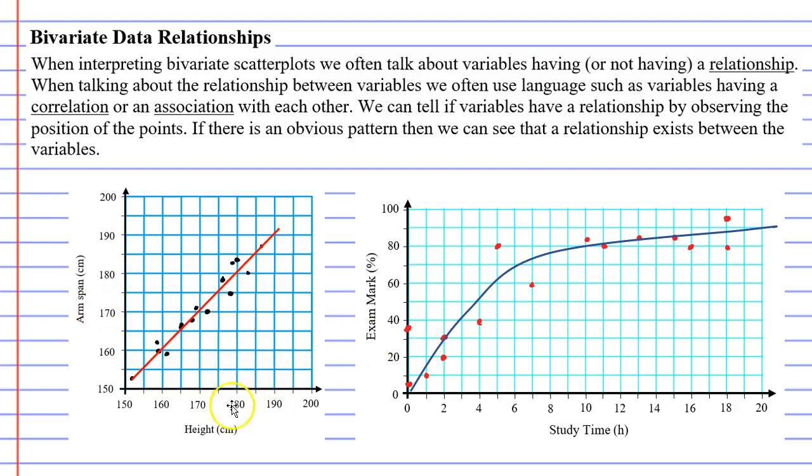The first graph showed a relationship between height and arm span, and we could see this relationship because the dots formed kind of a pattern that followed this red line here. In the second graph, we also noticed a relationship again, except that this time the relationship was non-linear. It was more of a curve than a straight line.